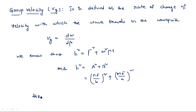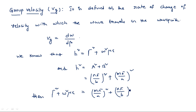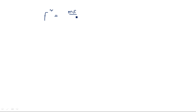Equating these two expressions, gamma² plus omega² mu epsilon equals (M pi/A)² plus (N pi/B)². Keeping gamma on the left-hand side, gamma² equals (M pi/A)² plus (N pi/B)² minus omega² mu epsilon.